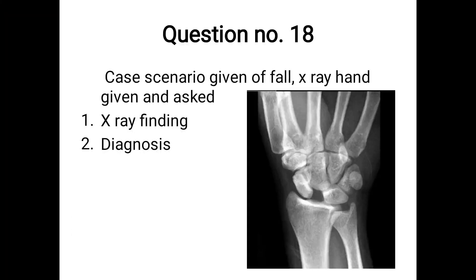Question 18: a wrist X-ray in AP/PA view. Findings: Terry Thomas sign — increased distance between the scaphoid and lunate bone; Gilula arc not maintained. Diagnosis: perilunate dislocation, type 1.